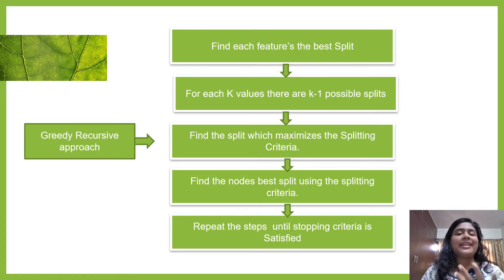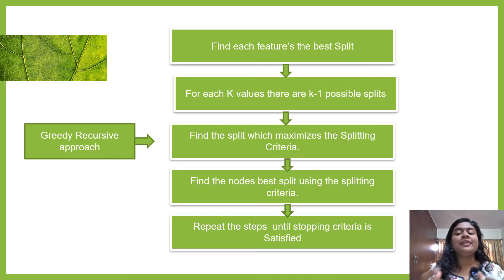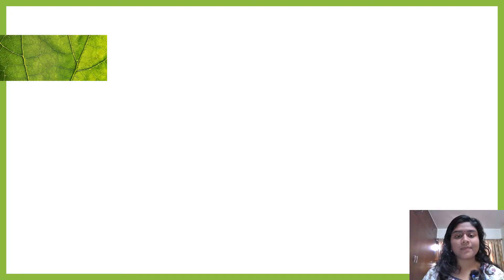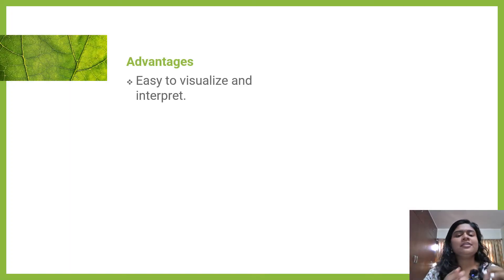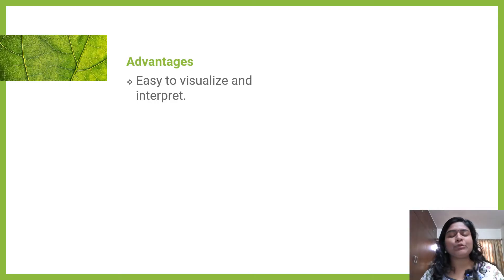When we learn any model, it is very important that we understand its advantages and disadvantages, because if we do not understand them we won't be able to apply it in different scenarios. The first advantage is that it is easy to visualize, interpret, and understand. You have a binary tree split into two parts only, so you can actually understand what is going on.